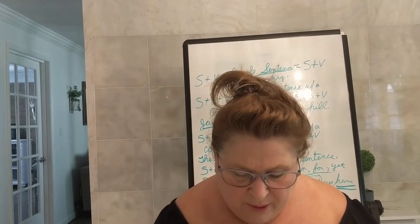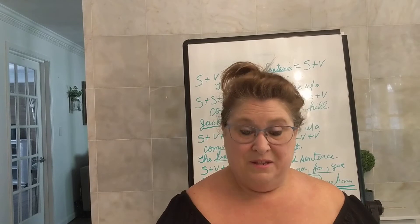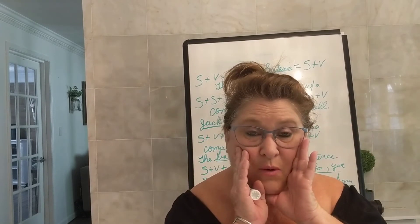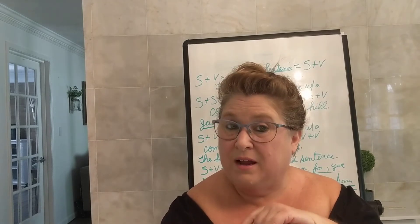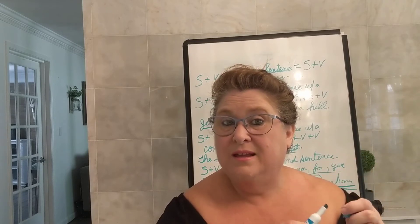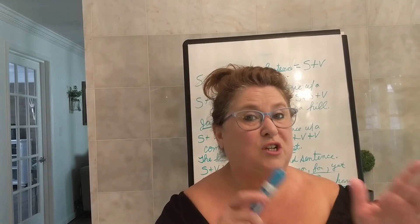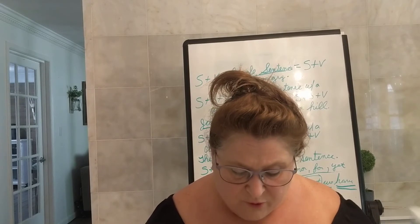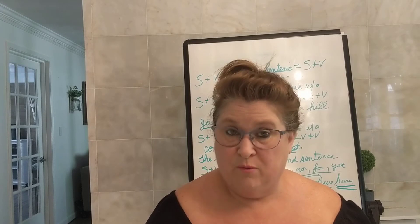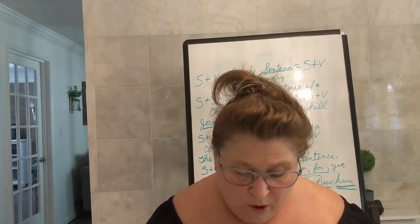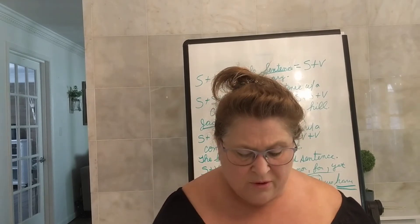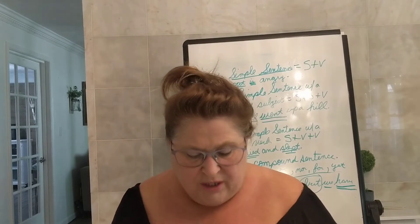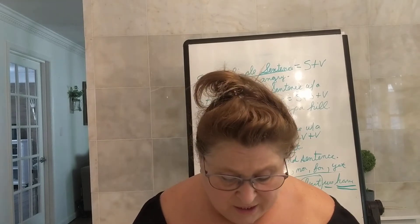Number one: 'John will bring the popcorn, and Ashley will make candy.' I see a comma and — circle that comma and, because that tells us we have a compound sentence. Write C on the line. The verb in the first complete thought is 'will bring' — a verb phrase. Who or what will bring? John — underline John once, will bring twice. In the second complete thought, verb is 'will make.' Who or what will make? Ashley — Ashley is our subject.